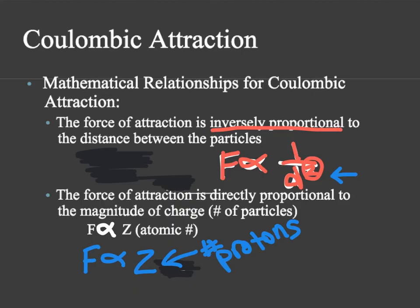The farther the electrons get away from the nucleus, the weaker the attraction — so the atom is more unstable and has more energy because it's unstable. The closer those electrons are to the nucleus, the stronger the attraction, and the more stable an atom will feel with its electrons.